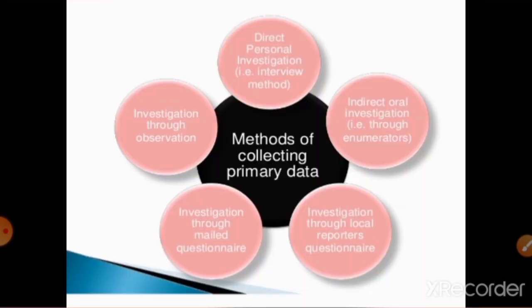Next, let's see the methods used for collecting primary data. The first one is direct personal investigation, that is the interview method. The second is indirect oral investigations through enumerators. The third is investigation through local reporters and questionnaires. The fourth is investigation through mailed questionnaires, and the fifth is investigation through observation.